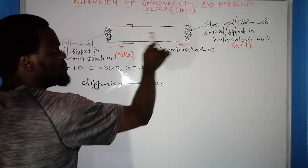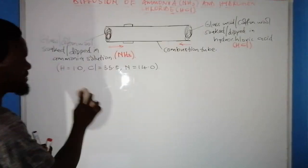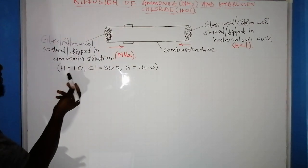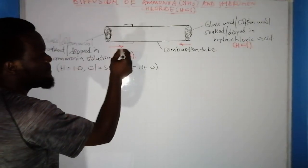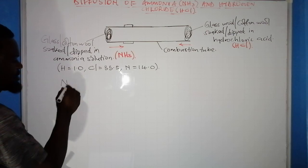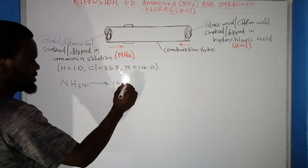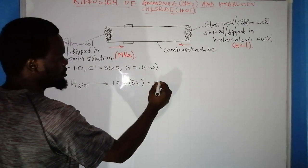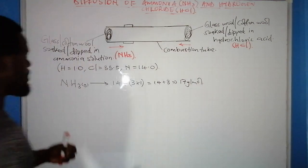When gases diffuse they do so with respect to molecular mass. Given hydrogen = 1, chlorine = 35.5, and nitrogen = 14.0, I can calculate the molar mass of ammonia. Ammonia (NH₃) has one mole of nitrogen (14) plus three moles of hydrogen (3 × 1), giving 14 + 3 = 17 grams per mole. So one mole of ammonia measures 17 g/mol.